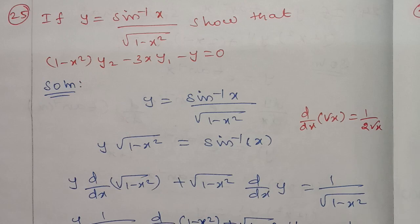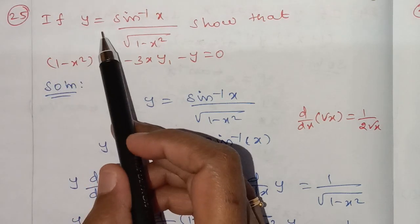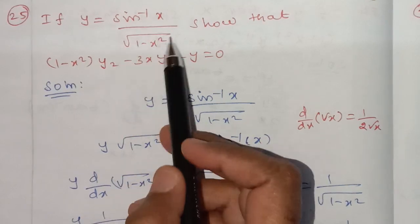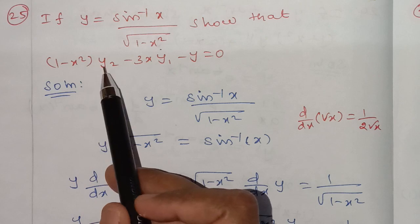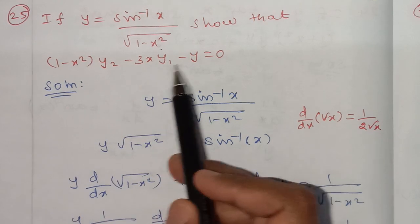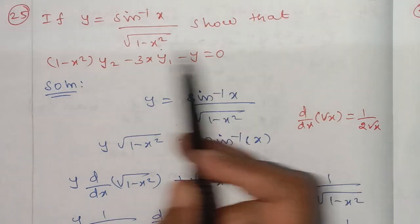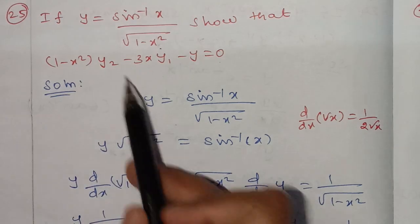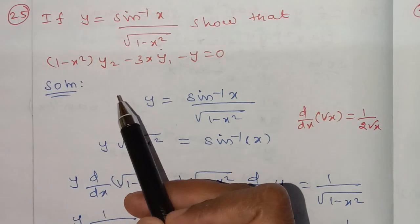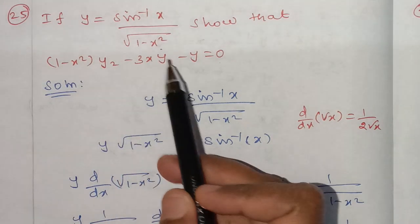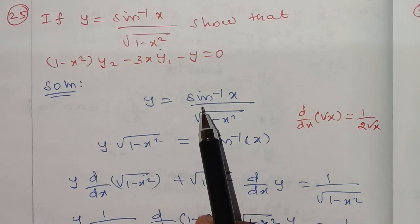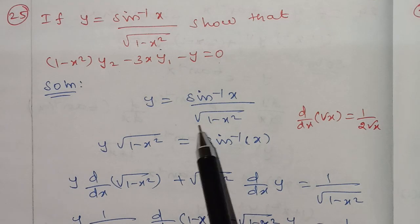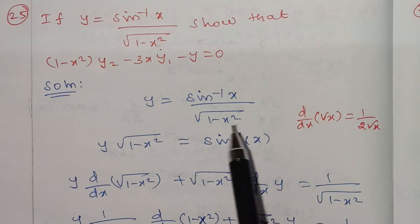Given y equals sin inverse of x divided by square root of 1 minus x squared. We need to prove that y₂ minus 3x·y₁ minus y equals 0, where y₁ is the first derivative of y and y₂ is the second derivative of y.